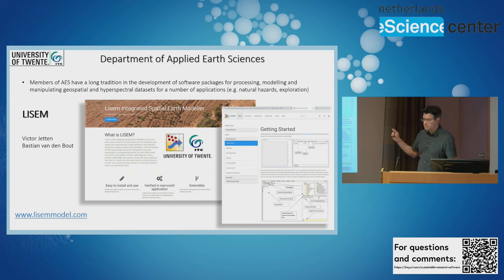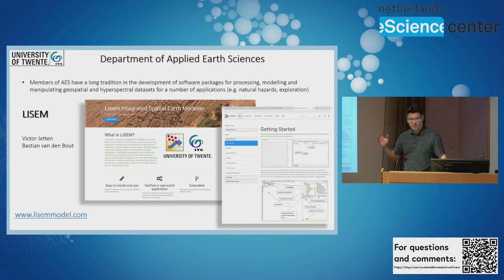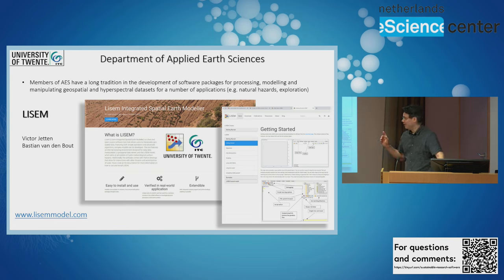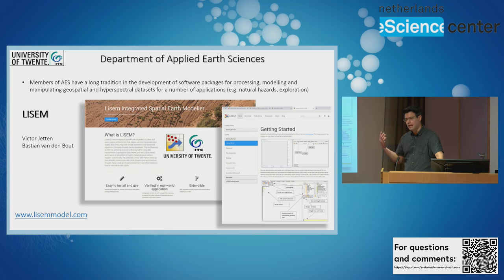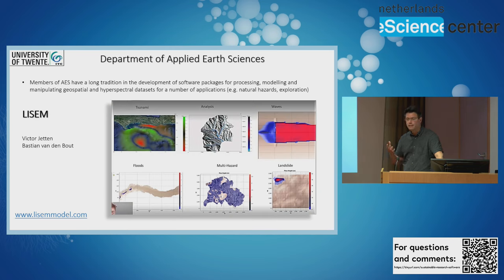Let me start with Lysim. Lysim is a fantastic platform — it's been under development for 30 years now, so we're talking about sustainability, which is actually not bad at all. It's a very complete package already. If you go to the website, it's full of videos, tutorials, and documentation. It allows you to do fantastic things in terms of manipulating geospatial data, and it's also a fully multi-hazard modeling platform as well.